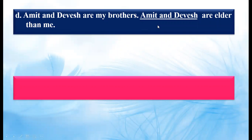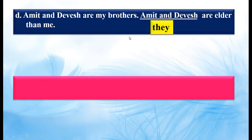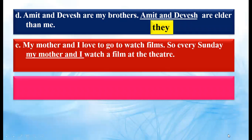Amit and Devesh are my brothers. Amit and Devesh are elder than me. These two words are underlined as a noun, and we have to use a pronoun instead. Amit and Devesh are two people and the person speaking about them is not included. So we will use T-H-E-Y, 'they', because the person speaking is not included. That is why we are not going to use 'we'.